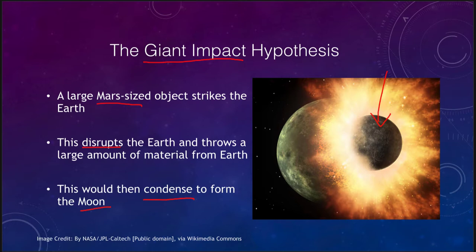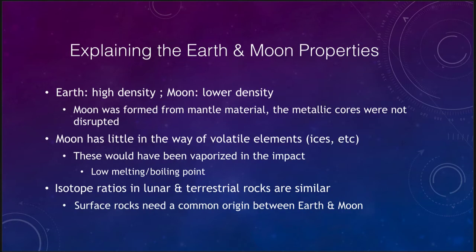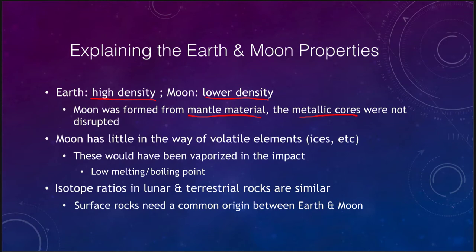So what does this explain about some of the properties of the Earth and the moon? It can explain why the Earth has a high density and the moon has a lower density. The moon was formed from mantle material, and the metallic cores were not disrupted but coalesced together at the core of the Earth. This explains why the Earth has an unusually high density and an unusually high amount of metal for its location in the solar system, and why the moon, being made up of crustal material from both objects, has such a rocky composition and so little metal.